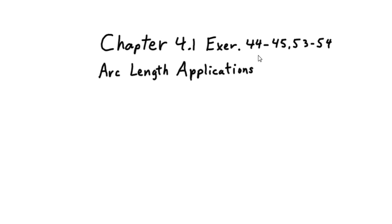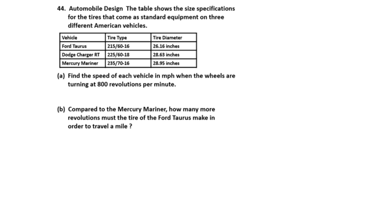Chapter 4.1 exercises 44, 45, 53, and 54 — arc length applications. We're going to usually do the odd number problems, but we're going to start out working partially on even number problem 44: automobile design. The table shows the size specifications for tires that come with standard equipment on three different American vehicles — Ford Taurus, Dodge Charger, and Mercury Mariner. Part A: find the speed of each vehicle in miles per hour when the wheels are turning at 800 revolutions per minute.